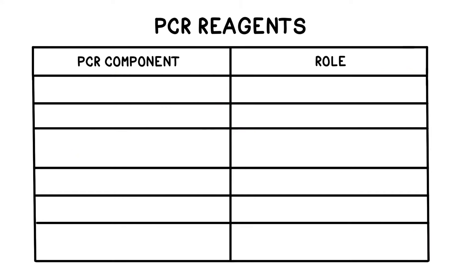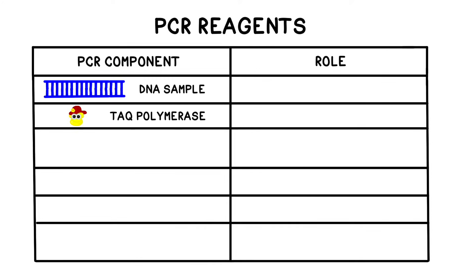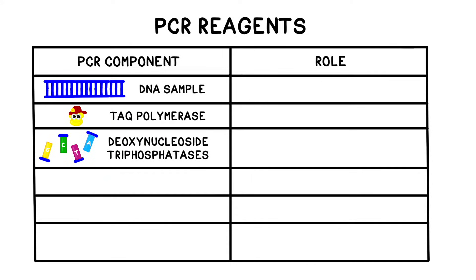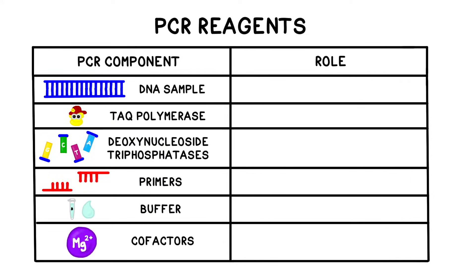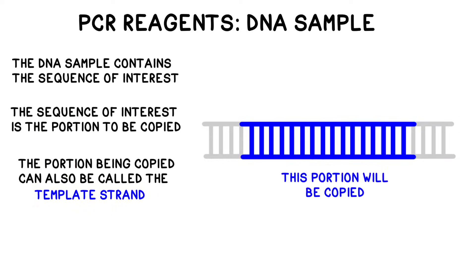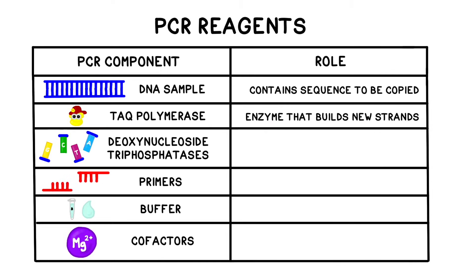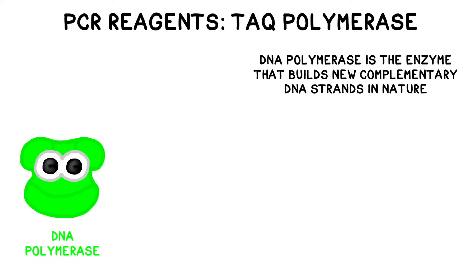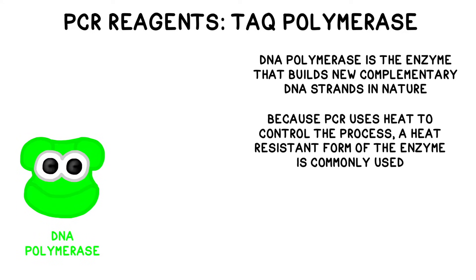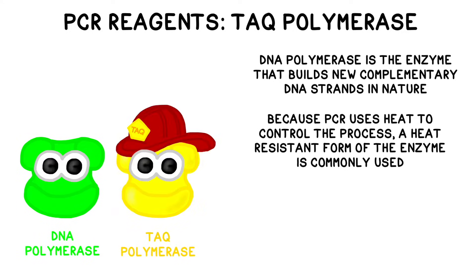If you're aiming to perform PCR, several reagents must be combined: a DNA sample, a polymerase enzyme, deoxynucleosides, primers, buffers, and cofactors. The DNA sample contains the sequence of interest to be copied — this will become known as the template strand. The enzyme DNA polymerase will be used to build the new DNA strands. Most types of DNA polymerase would be denatured by the hot temperatures used in the PCR reactions, so for these purposes, we use a special polymerase enzyme called Taq polymerase.